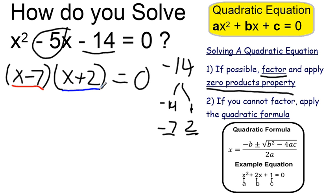If x-7 equals 0, that means x must be 7. 7-7 is 0, and if this part is 0, the whole thing is going to be 0.